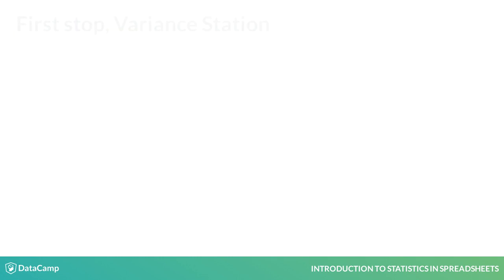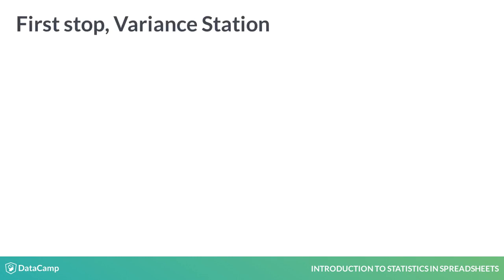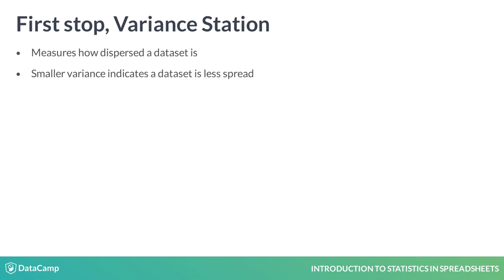Variance measures how dispersed a dataset is from its mean. The smaller the variance, the less spread the data is. Conversely, large differences between data points increase the variance.